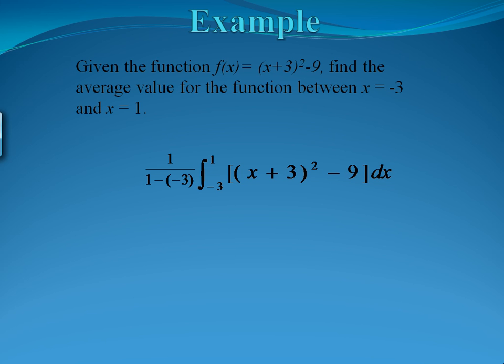Again, the first step is to calculate the integral area. So when you plug this into your calculator, you'll get that the area under the curve from negative 3 to 1 is negative 14.67.